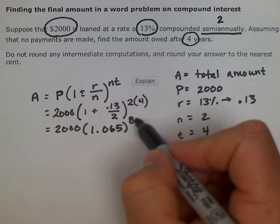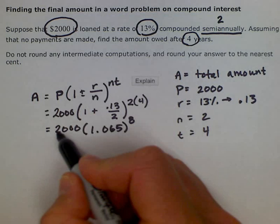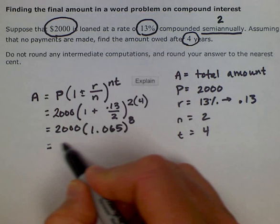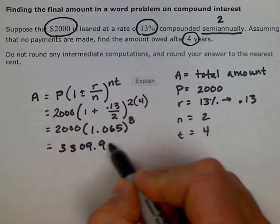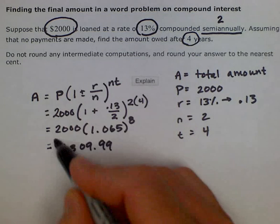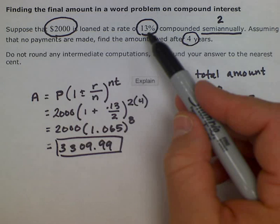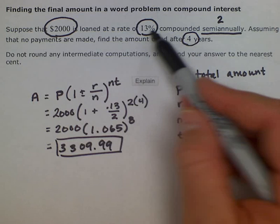Our final answer will be $3,309.99 approximately. This is the final amount that will be owed if it's 13% interest and compounded semi-annually.